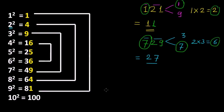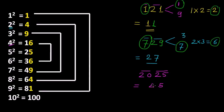Now let us take another number — 2025. We have 2 pairs: 25 and 20. We focus on the unit place, which is 5. Since 5 has only one option, the unit place of the square root must be 5. Now we find the tens place using 20 — it is between 16 and 25, and the lower number corresponds to 4. So we write 4 at the tens place. The square root of 2025 is 45.